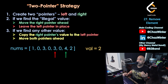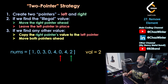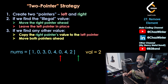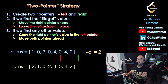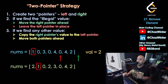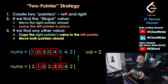The right pointer sees a 3 — 3 is not 2 — so let's copy the 3 to the left pointer and move both pointers ahead. Now the right pointer sees a 0, not 2, so copy that 0 and move both pointers. The 4 is not a 2, so copy that 4 to the left pointer and move both pointers ahead. Now the right pointer sees a 2 — the illegal value — so leave the left pointer alone and move the right pointer ahead. At this point the right pointer is no longer in the array, so we stop. Here is the result array.